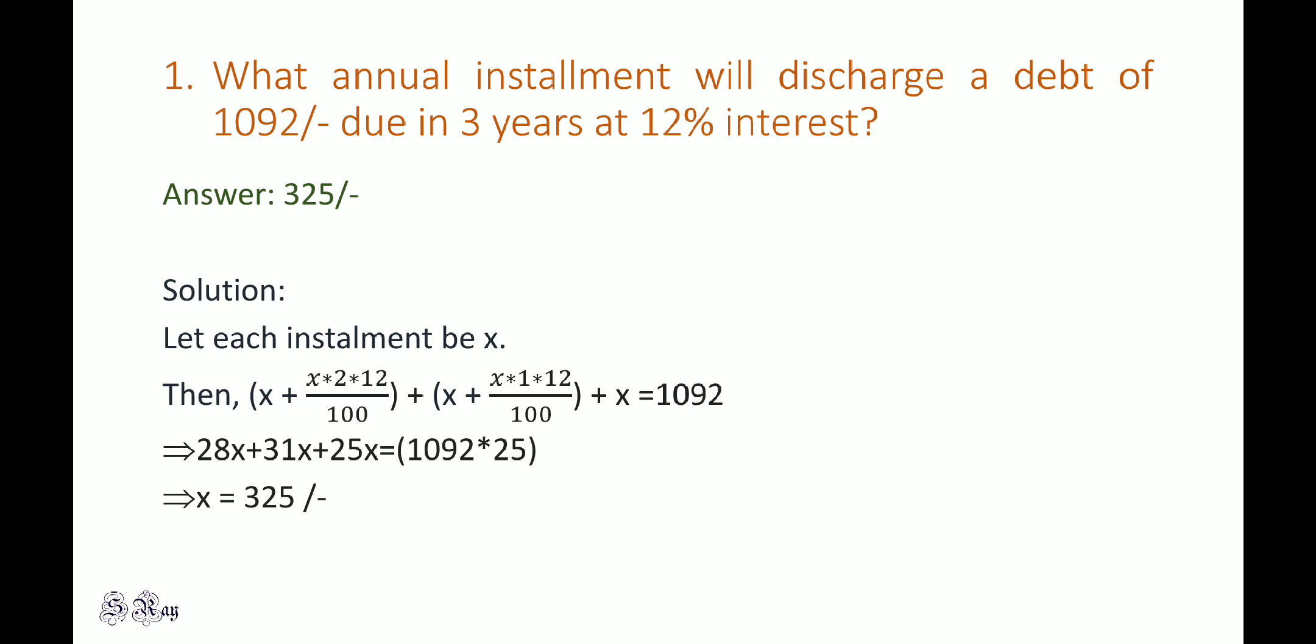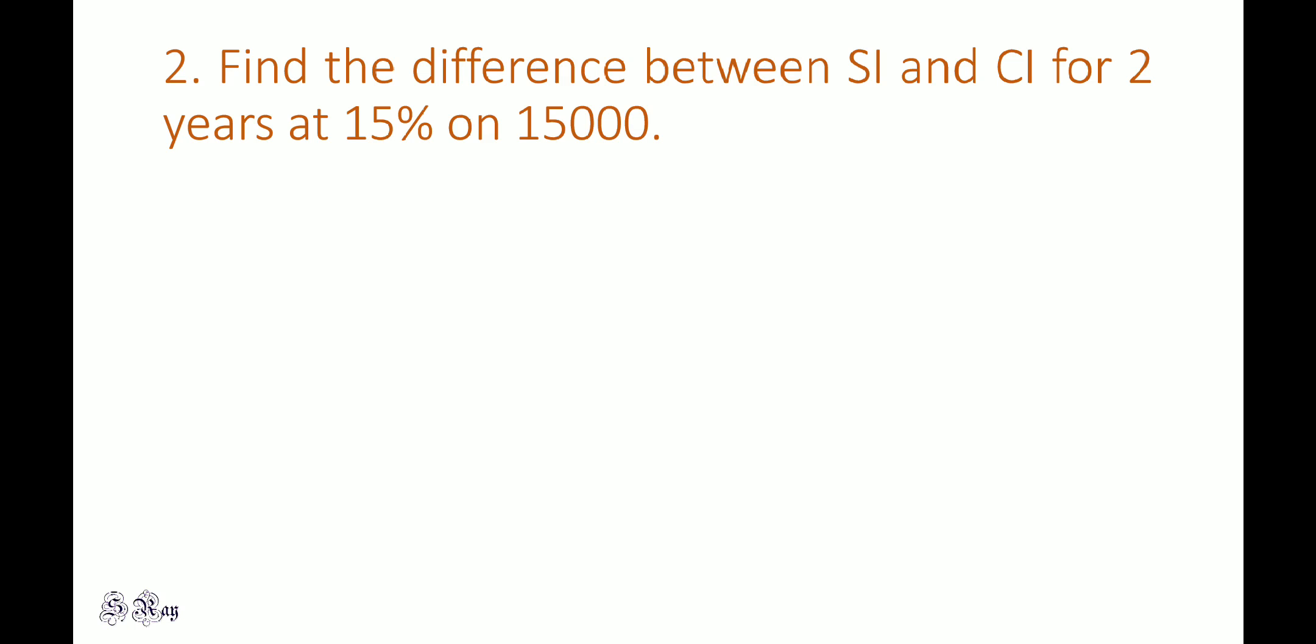Let's look at the next question. Find the difference between simple interest and compound interest for two years at 15% on 15,000. This is a favorite question of aptitude test setters. You might think you have to calculate simple interest, then compound interest, and then find the difference. But no, there's only one step to get the answer, which is 337.5.